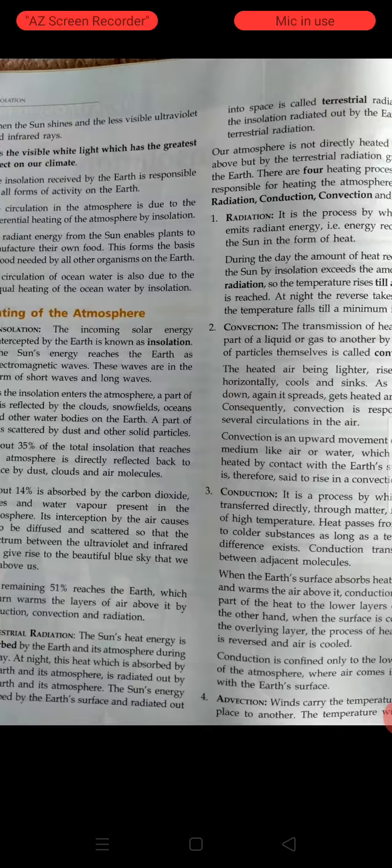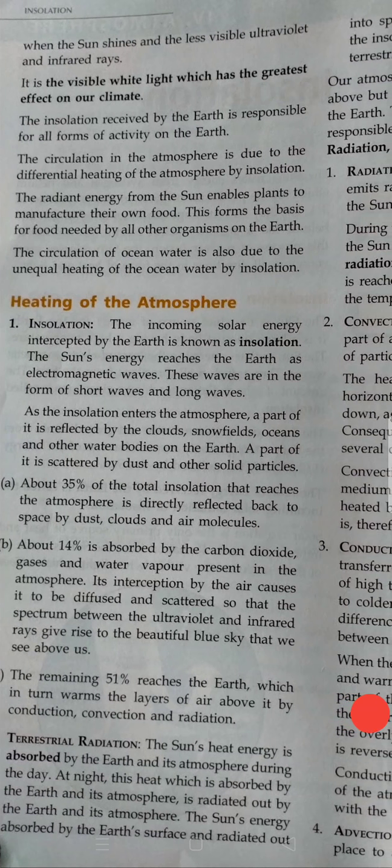The second definition is about terrestrial radiation. Let's see how our atmosphere works. As much as the sun's heat and light reaches the atmosphere, 35% of the total insolation that reaches the atmosphere is directly reflected back to space by dust particles, clouds, or air molecules.